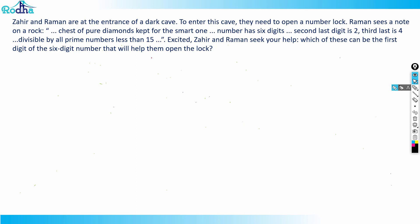Hi guys, let's hear this question from ZA221. This question says that Zahir and Raman are at the entrance of a dark cave. To enter this cave, they need to open a number lock. Raman sees a note on a rock: chest of pure diamonds kept for the smart one.